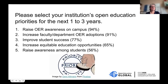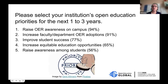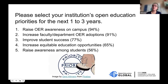What were priorities for the next one to three years? This hasn't changed much comparing 2020 and 2021: raising awareness on campus — not just for faculty but also administrators and students — figuring out how students can be advocates for open education, faculty OER adoptions, improving student success, and increasing equitable education opportunities, particularly for those students who can benefit most from open education.